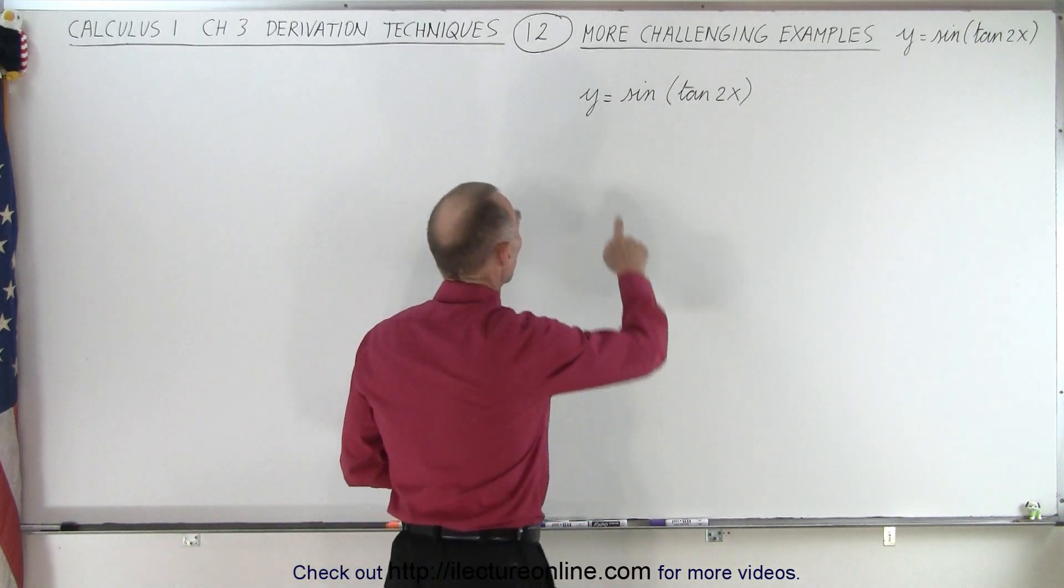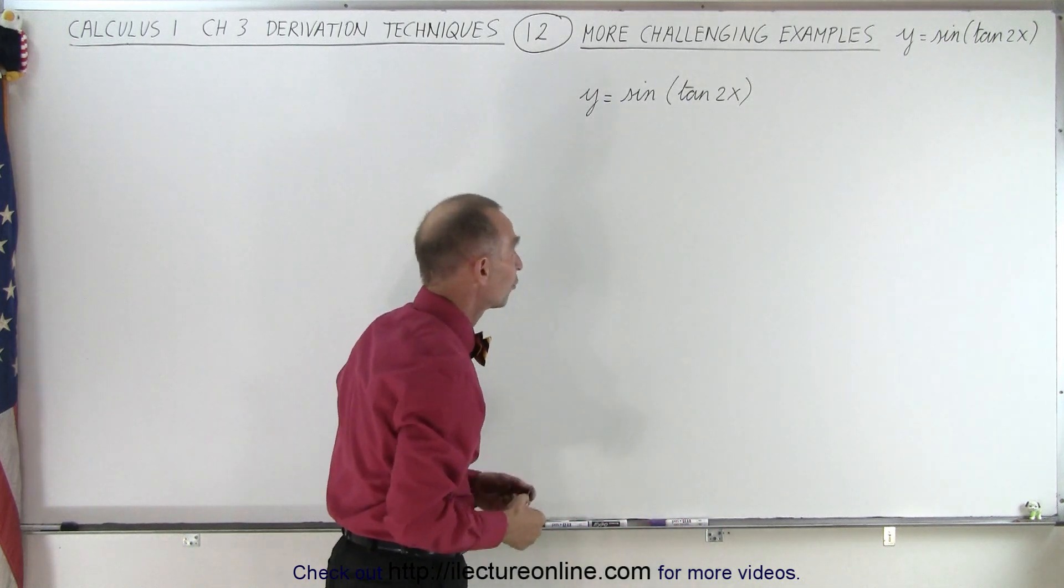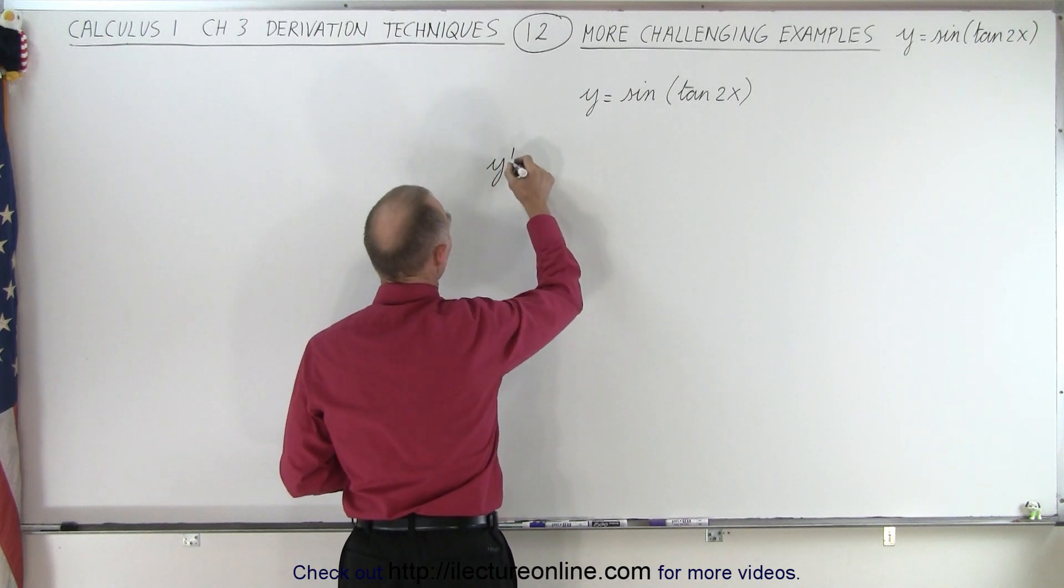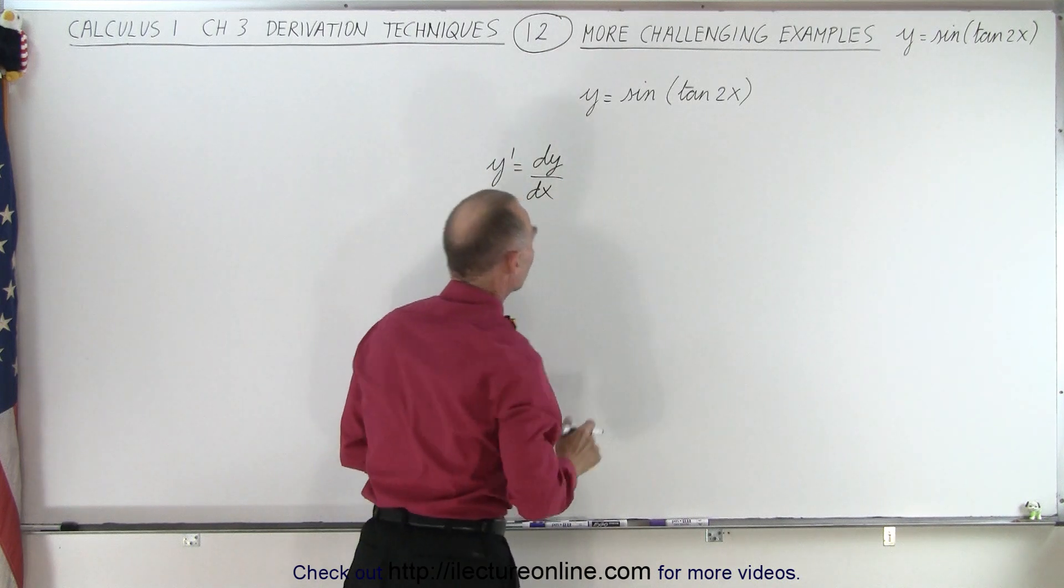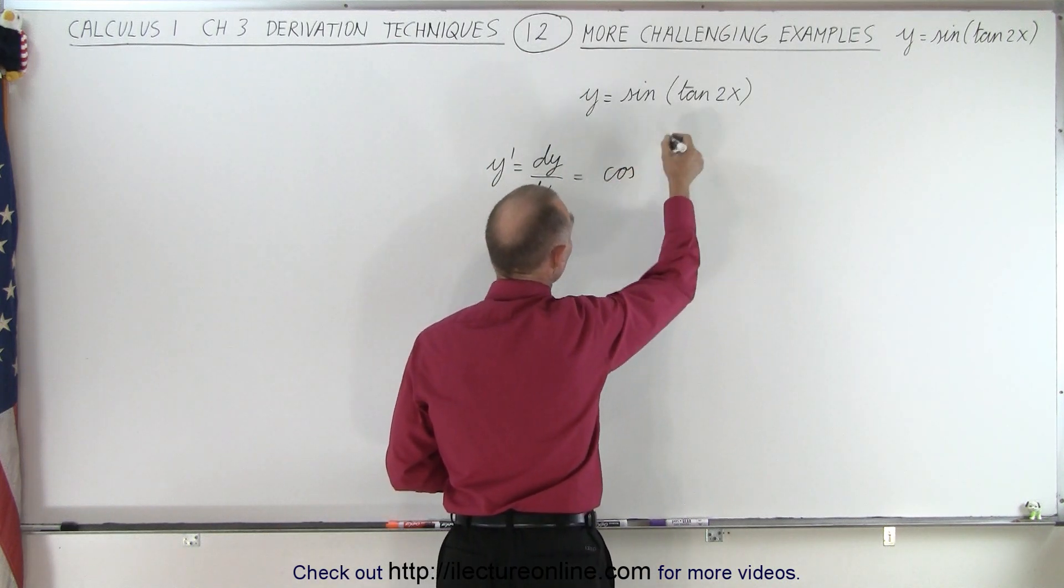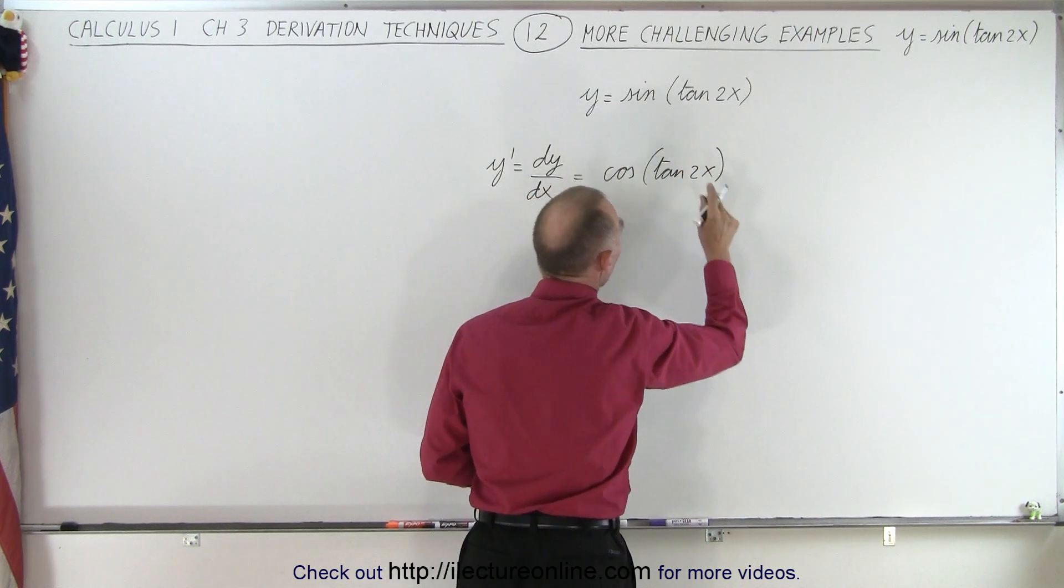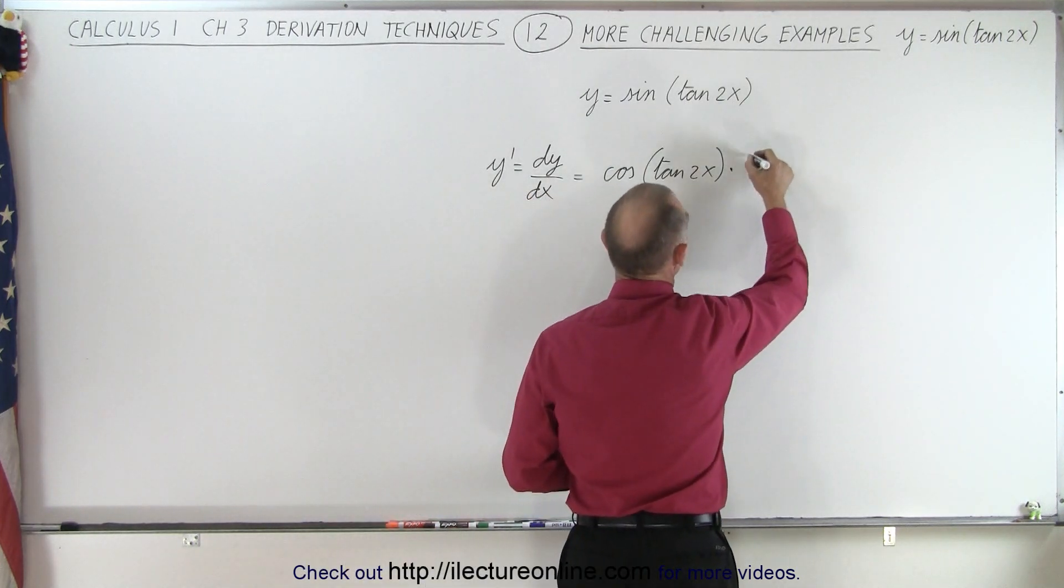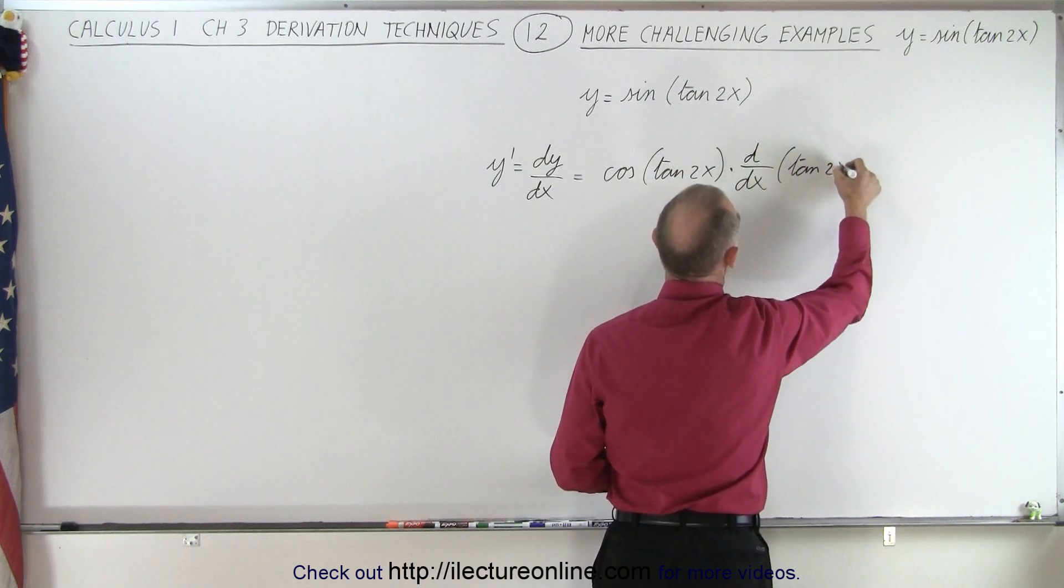So here we have y equals the sine of something, some argument right there, which is the tangent of 2x. So if we're going to find the derivative, y prime, which is the same as dy dx, we take the derivative of the sine, which is equal to the cosine. And so that would be the cosine of the same argument times the tangent of 2x. But now we have to take the derivative of the argument. So that's times the d dx of the tangent of 2x.